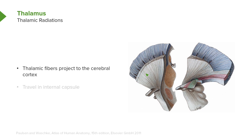Thalamic fibers are shown through here in these darker colored structures. This is a more anterior view of those thalamic radiations, and this is a more posterior view. The thalamic radiations travel in the internal capsule, so they accompany the motor axon fibers that are descending within the internal capsule. The motor fibers are shown here in the lighter color, descending through the internal capsule.